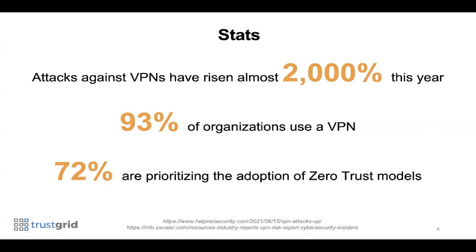For those unfamiliar, zero trust is based on the concept of never trust, always verify as it relates to access. Everything on the network is micro-segmented to prevent lateral movement, and all traffic and users are authenticated before access is allowed. This stands in contrast to a traditional perimeter-based security model that allows every user and system inside the walls of the network to move about freely.